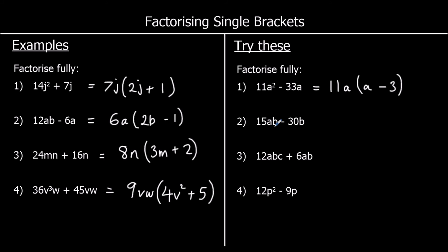Question 2: 15ab minus 30b. 15 and 30 are both in the 15 times table — that's the biggest times table they're both in — and they've both got a b in them, so we take b outside as well. So 15b goes outside the brackets. 15b times what makes 15ab? That's a. And 15b times what would make negative 30b? That's negative 2.